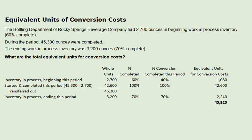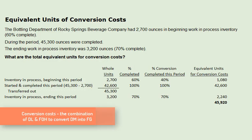First, what are conversion costs? Conversion costs are direct labor and factory overhead. They are used to convert materials from work-in-process to finished goods.